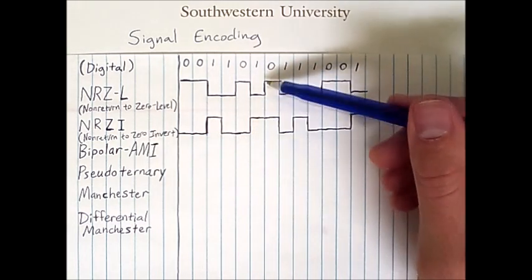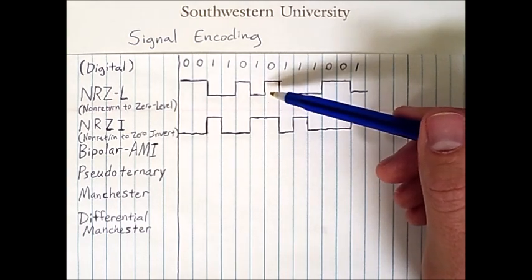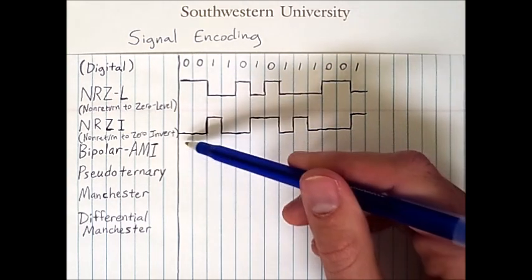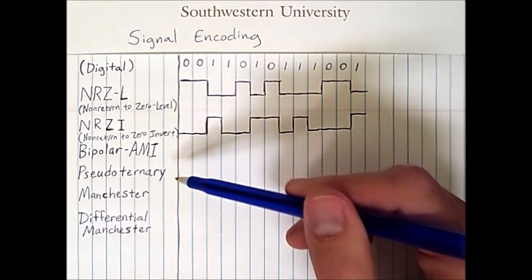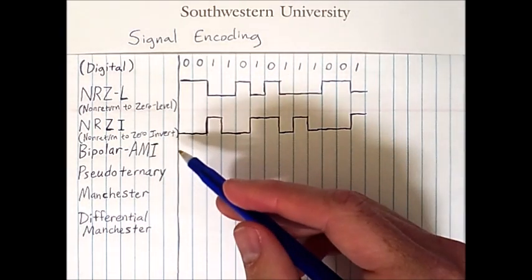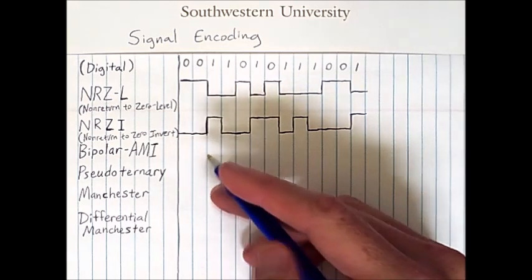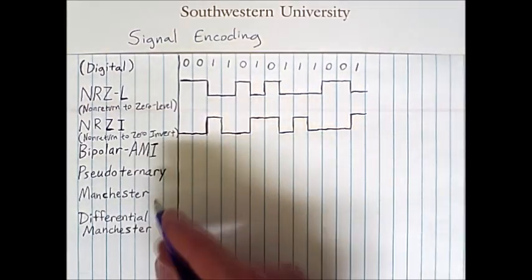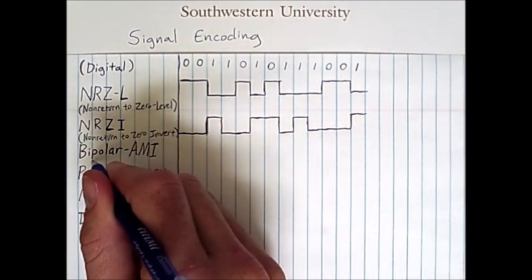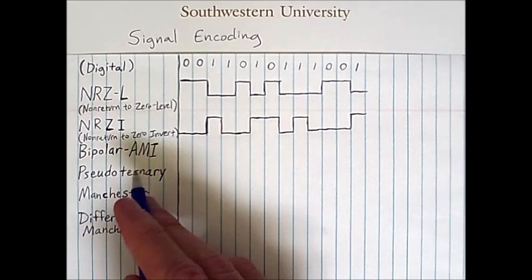Differential encoding schemes like this can be useful in the presence of noise, because detecting a voltage transition is usually easier than ensuring that the voltage maintains a certain level. Both of these schemes require use of two distinct voltage levels. The next two schemes involve three voltage levels — for this reason they are known as multi-level binary schemes. The first of these is bipolar AMI, where AMI stands for Alternate Mark Inversion.